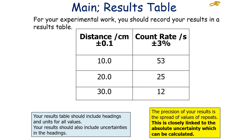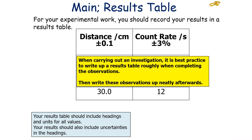The precision of your results is linked to the spread of values of your repeats, and is closely linked to the absolute uncertainty. When carrying out an investigation, it's best practice to write up results on a results table roughly while completing the observations, and then write these up neatly afterwards.